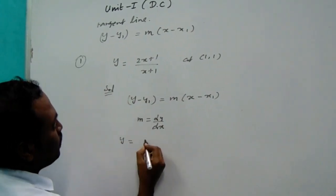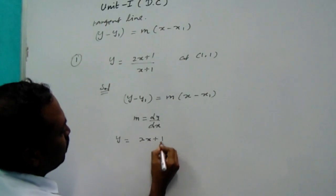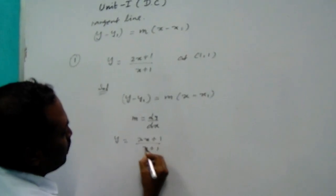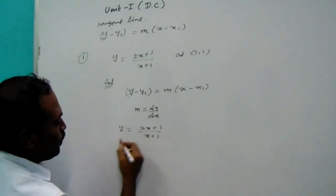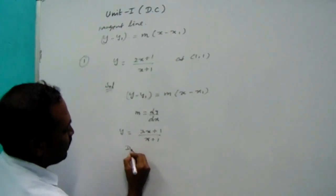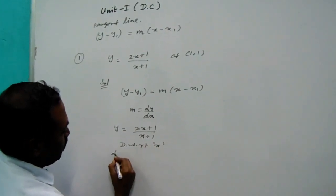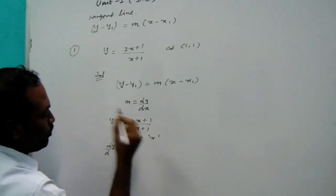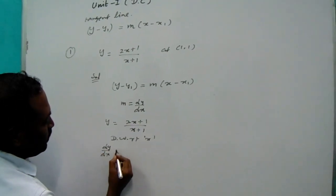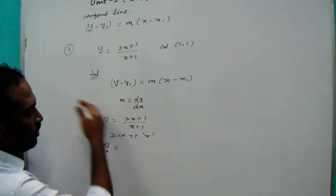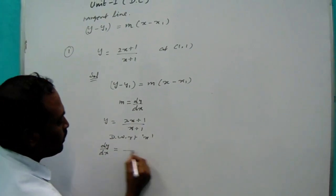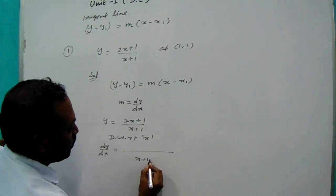What is the y? 2x plus 1 divided by x plus 1. This is the function of x. Then you have to differentiate with respect to x. Using quotient rule, x plus 1 in the denominator squared.